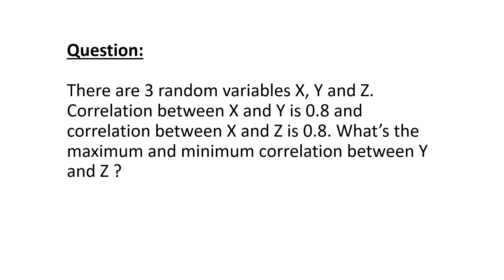There are three random variables X, Y, and Z. Correlation between X and Y is 0.8 and correlation between X and Z is 0.8. What's the maximum and minimum correlation between Y and Z?